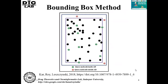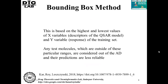The first method is the bounding box method, which is based on the range of the descriptor values. We consider the range of each descriptor for the training set compounds, and it is desirable that the value of a particular descriptor for the query compound will be within that range. This rectangle encloses the training set molecules, and it is desirable that the test compounds are also enclosed within that domain. This is based on the highest and lowest values of X variables and Y variable of the training set. Any test molecule outside these ranges is considered out of the AD and their predictions are less reliable.